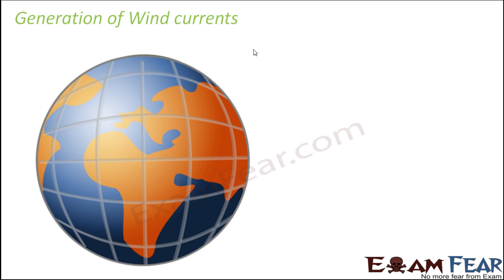Let us look at the earth as a whole, because in order to understand why wind currents are generated, we need to have the basic knowledge of geography, because the location of different parts of the earth plays a very important role in this entire mechanism of wind current generation.